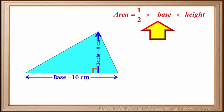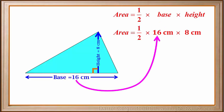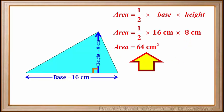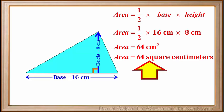The formula for the area of a triangle is area equals a half times the base times the height. The base is 16 centimeters and the height is 8 centimeters. So the area is a half times 16 times 8, which comes out to 64 centimeters squared, or 64 square centimeters.